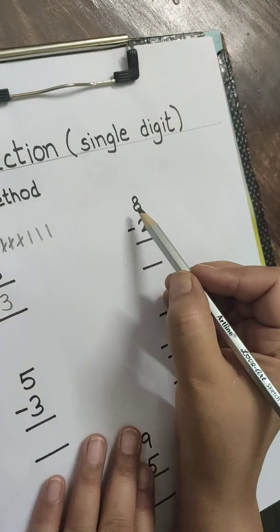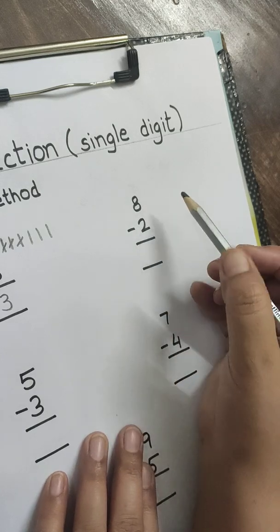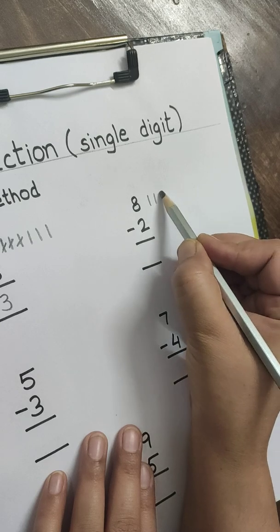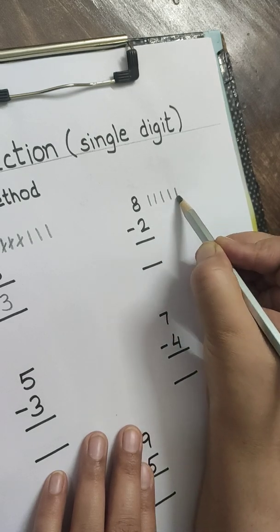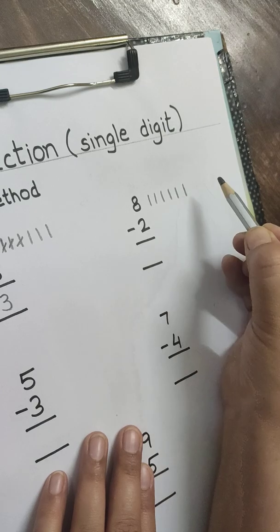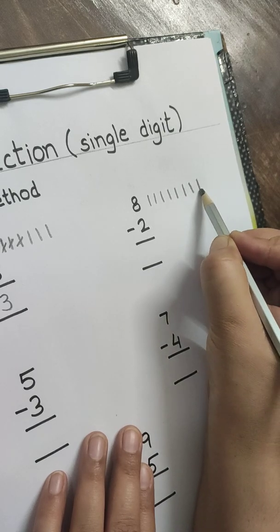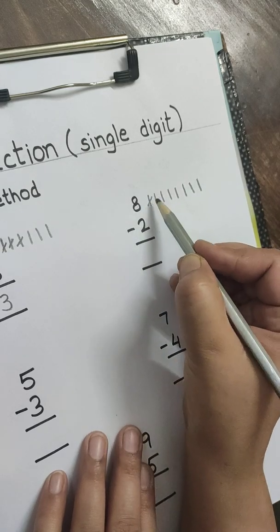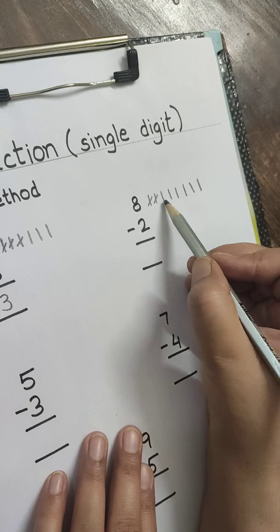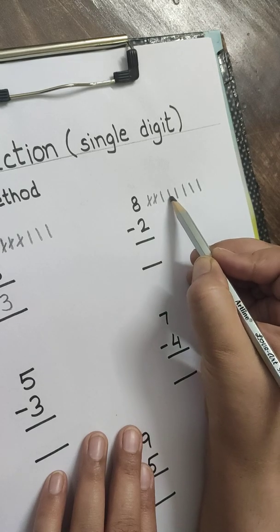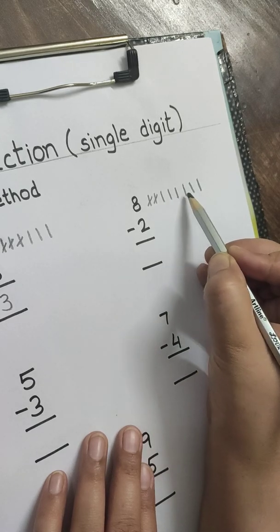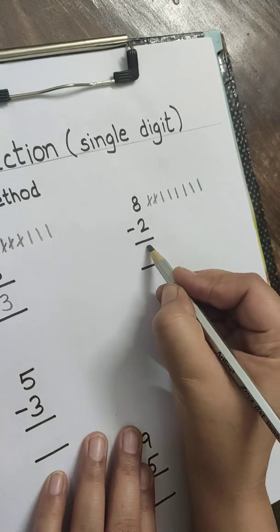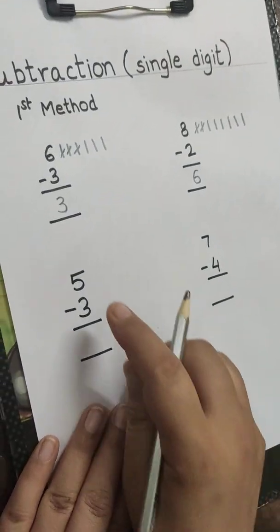Next is 8 minus 2. Again we will draw 8 lines: 1, 2, 3, 4, 5, 6, 7, 8. Minus 2, we will minus 2 lines: 1, 2. How many are remaining? 1, 2, 3, 4, 5, 6.